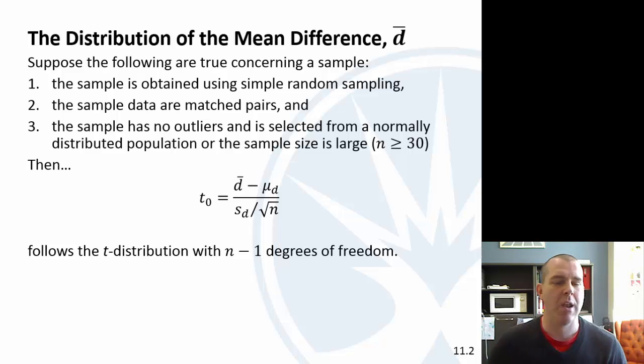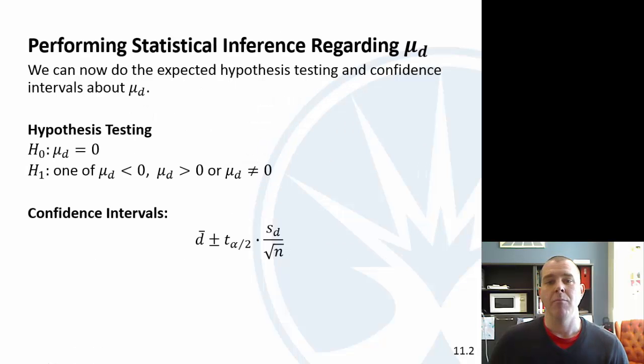Same conditions: simple random sampling, they have to be matched pairs, the sample has no outliers and is from a normally distributed population. So we can do hypothesis testing and confidence intervals. I think we're going to focus in the video on hypothesis testing. Your null hypothesis is typically that the mean difference is zero. Then you're looking: is the mean difference positive, negative, or just not equal to zero?